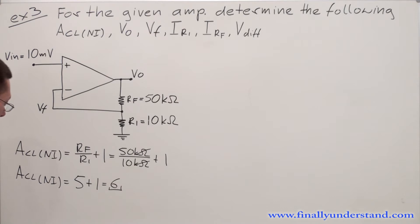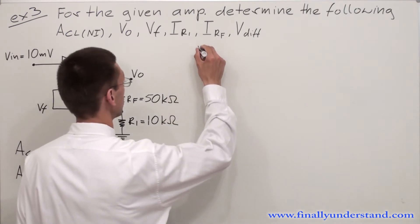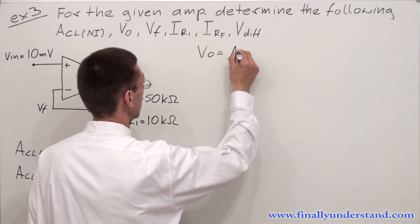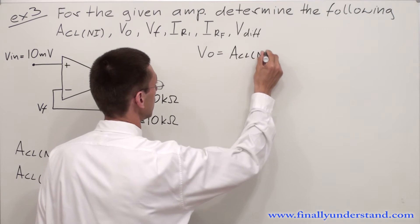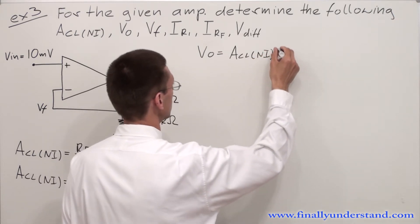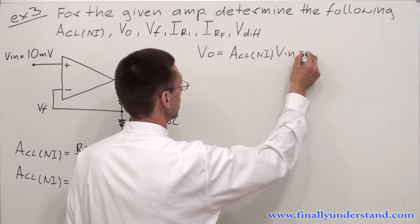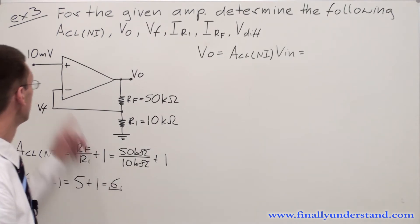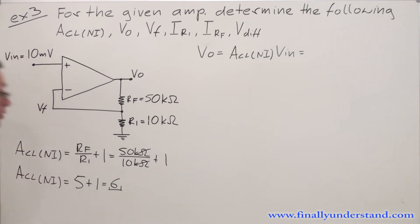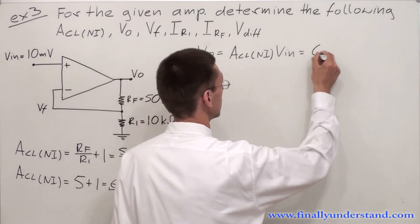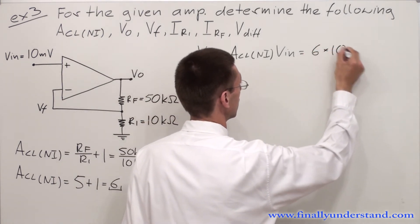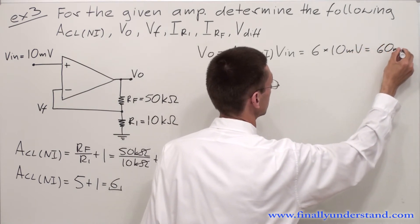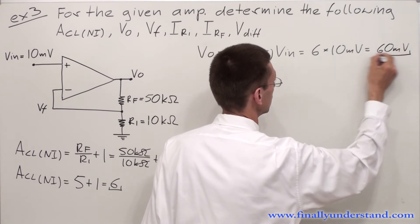In order to find V out, we're supposed to use the formula V out is equal to ACL times V in, where my ACL is equal to 6 and my V in is equal to 10 millivolts. 6 times 10 millivolts is equal to 60 millivolts. This is my output voltage.